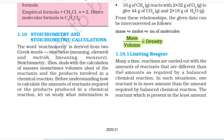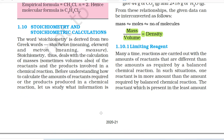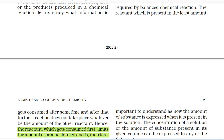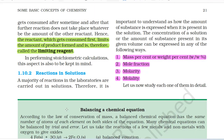1.10.1 Limiting Reagent. Many a time reactions are carried out with amounts of reactants that are different from those required by a balanced chemical reaction. In such situations, one reactant is in more amount than required. The reactant which is present in the least amount gets consumed after some time and after that further reaction does not take place whatever be the amount of the other reactant. Hence, the reactant which gets consumed first limits the amount of product formed and is therefore called the limiting reagent. In performing stoichiometric calculations, this aspect is also to be kept in mind.